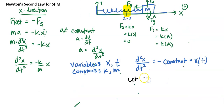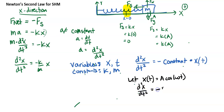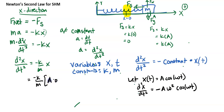We'll let x(t) = A·cos(ωt). We already found that d²x/dt² = negative A·ω²·cos(ωt). Plugging into our equation, the right side gives negative (k/m)·A·cos(ωt), and the left side is negative A·ω²·cos(ωt).